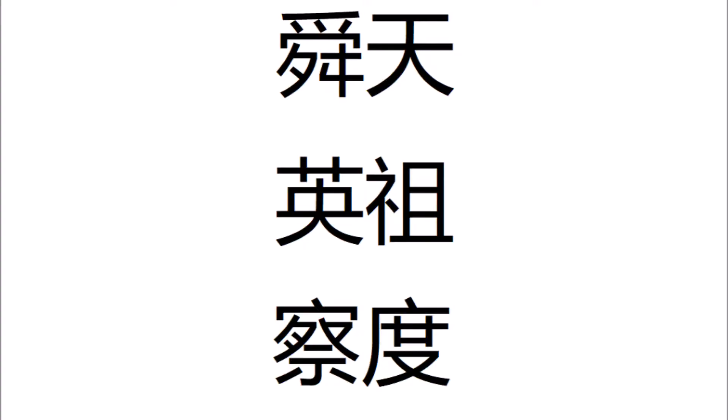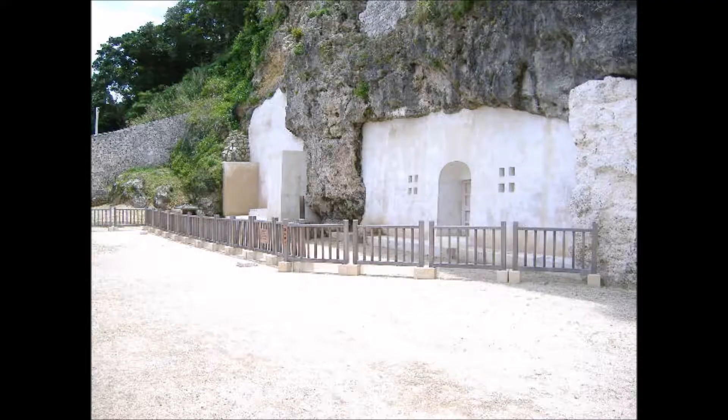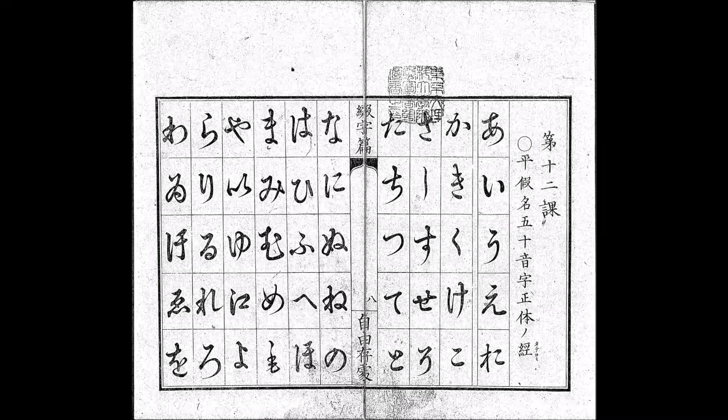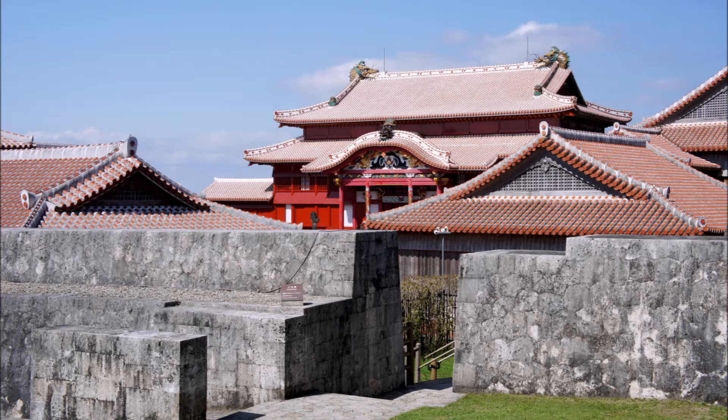The Gusuku period covers three dynasties, starting with Shunton's. Once Shunton died, he was buried in the Urasoi Odore mausoleum, and his son Shunbajunki ascended the throne. The biggest changes during his reign were the introduction of the Kana writing system from Buddhist monks from Japan, and the initial construction of Shuri Castle.